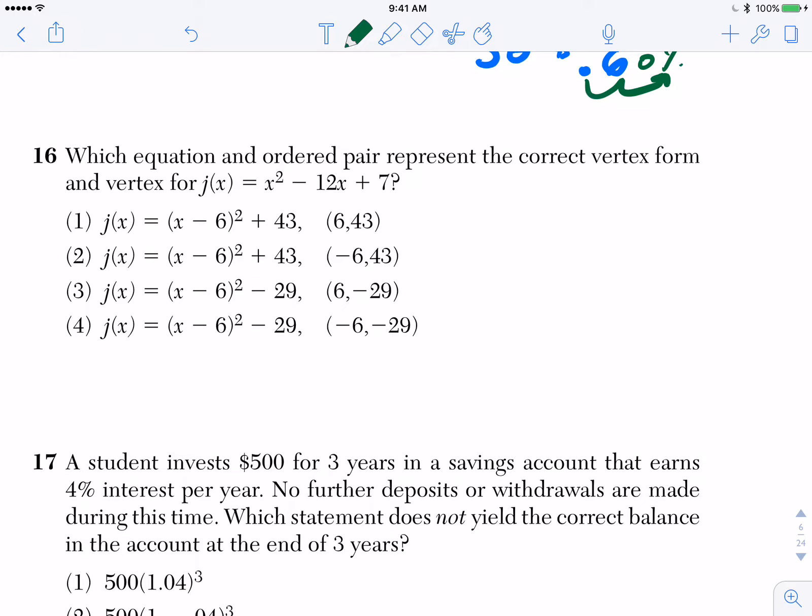Okay, for number 16 it says which equation and ordered pair represents the correct vertex form for J(x) = x² - 12x + 7? So again, another question here I was a little puzzled because it's a difficult concept, vertex form and completing the square and all that fun stuff, but you really could have answered this without knowing that much about vertex form.